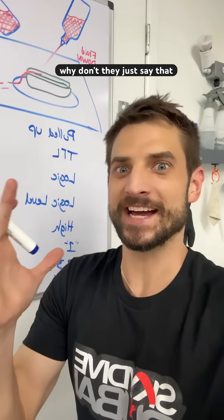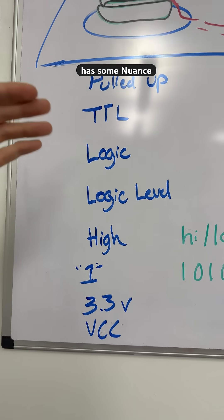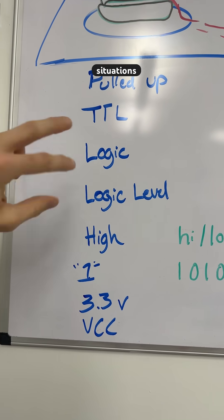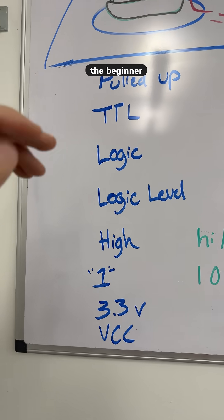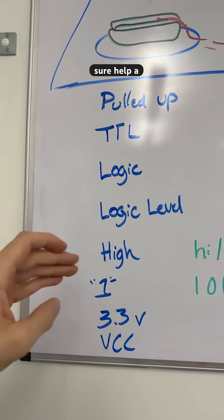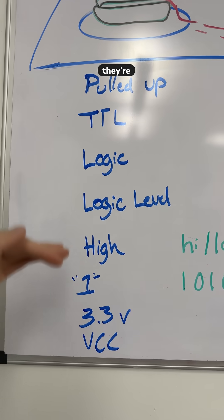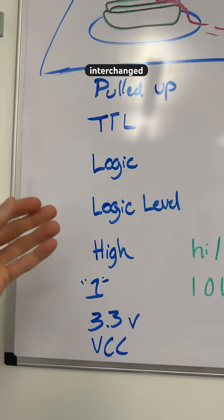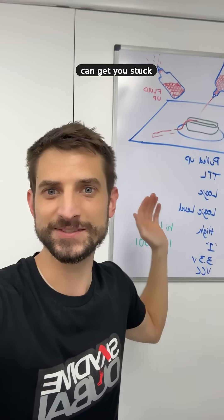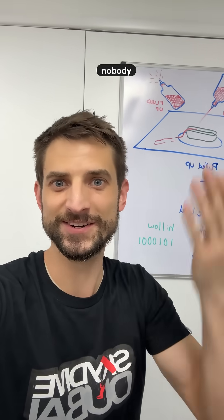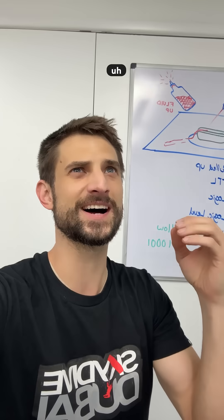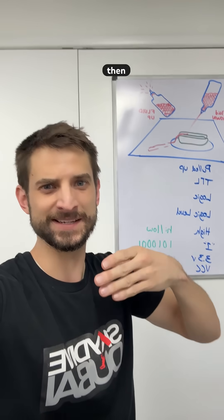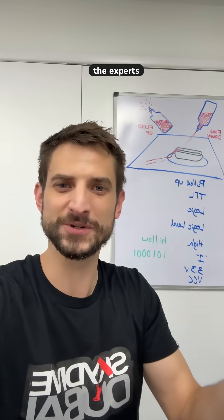Why don't they just say that? Each individual term has some nuance to it and we want to be precise in certain situations where there are differences. But for the beginner level, it would help a lot to know that they are related and often interchanged. This is one of those things that can get you stuck on a project, but nobody teaches it — because when you figure it out, it seems so obvious.